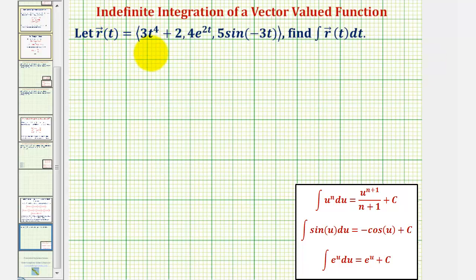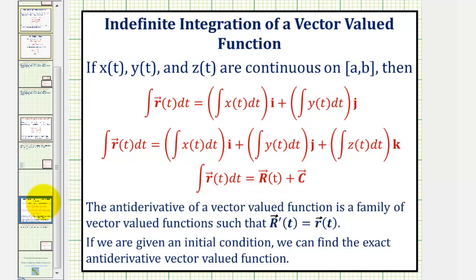We're given the vector-valued function r of t, and we want to find the integral of r of t integrated with respect to t. To integrate a vector-valued function, we integrate each component of the vector-valued function. Notice how the result is big R of t, another vector-valued function, plus a constant vector c.